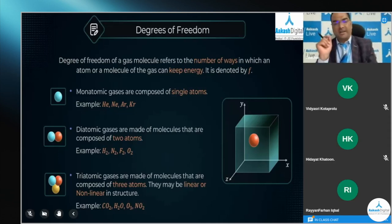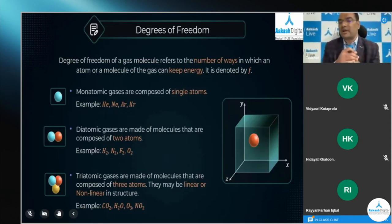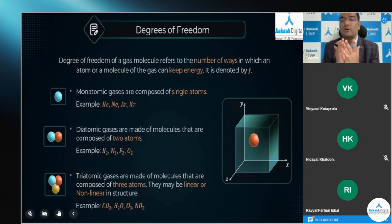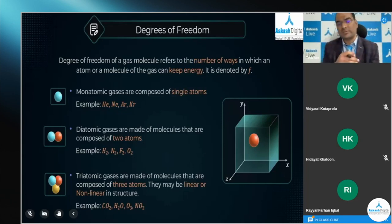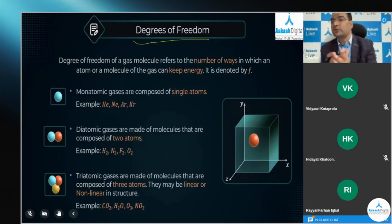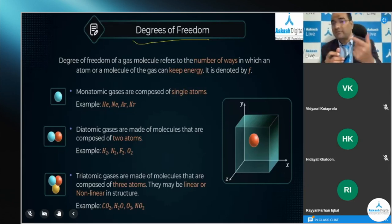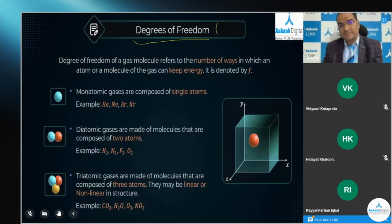What does it mean by degree of freedom? We have used this concept in an earlier chapter as well, and here we are going to discuss it in great detail. Degrees of freedom — as defined by the name itself — freedom refers to motion, and degree refers to in what ways we are talking about that motion of gas molecules. It tells us in how many ways any gas molecule can keep energy. Those ways by which gas molecules have that energy are known as degrees of freedom, represented by the symbol f.